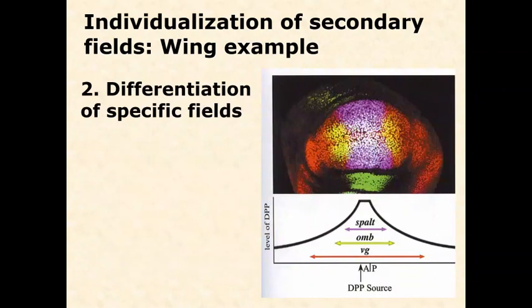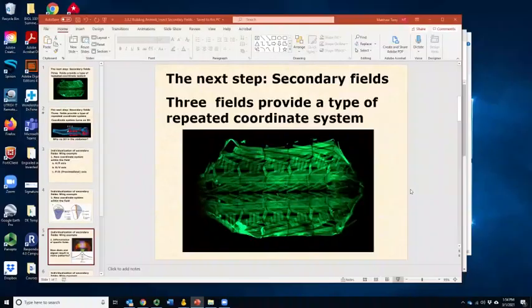And then differentiation begins. And so differentiation means how is this appendage going to be different than any other? How is a wing different than an antenna or different than a leg? And even in some cases, and this is very cool.